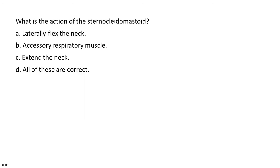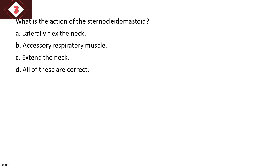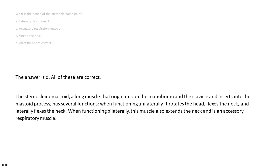What is the action of the sternocleidomastoid? A. Laterally flex the neck. B. Accessory respiratory muscle. C. Extend the neck. D. All of these are correct. The answer is D. The sternocleidomastoid, a long muscle that originates on the manubrium and the clavicle and inserts into the mastoid process, has several functions. When functioning unilaterally, it rotates the head, flexes the neck, and laterally flexes the neck. When functioning bilaterally, this muscle also extends the neck and is an accessory respiratory muscle.